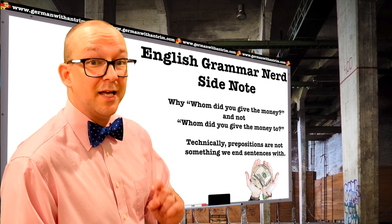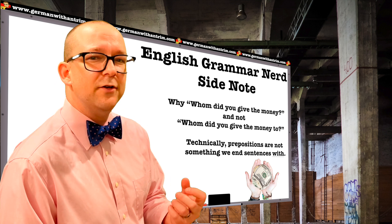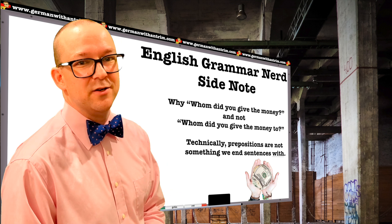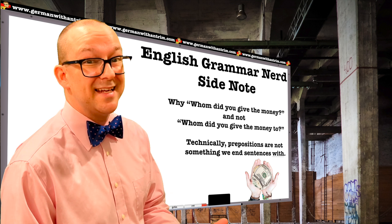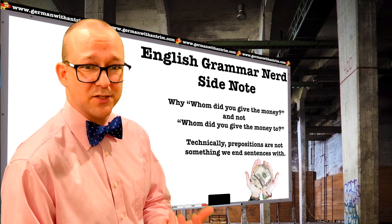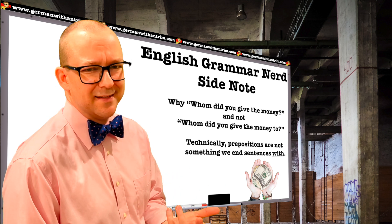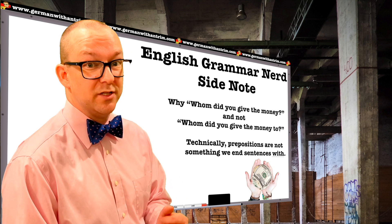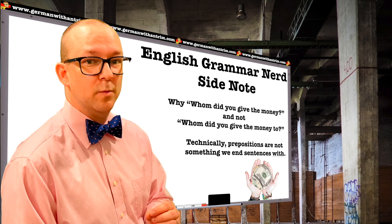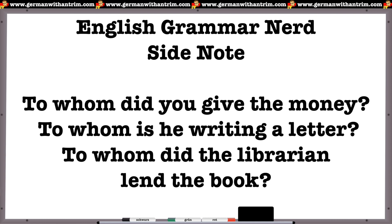English grammar nerd side note: Even Google thinks these sentences are wrong because no English speakers use proper grammar anymore. Google Docs wants me to add 'to' at the end, but prepositions are not something we end sentences with. Technically, if you add 'to,' it should go before 'whom': To whom did you give the money? To whom is he writing the letter? To whom did the librarian lend the book?